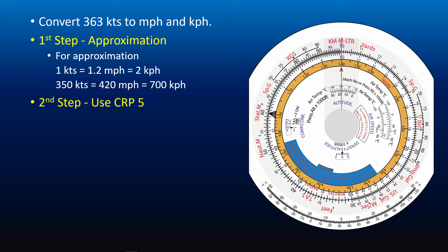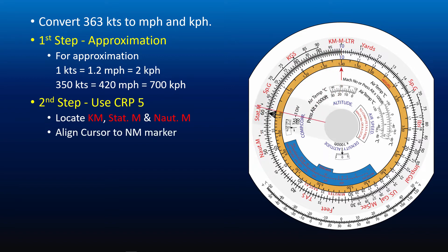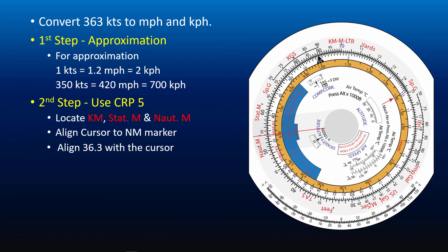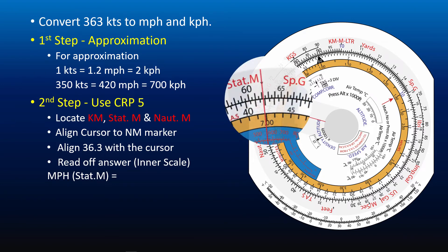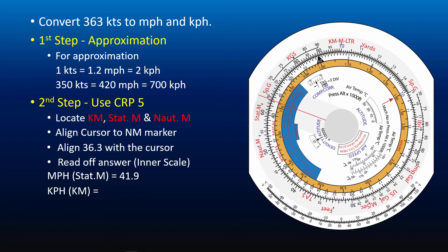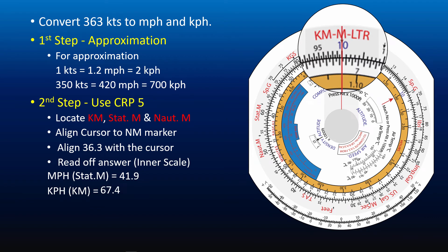The second step is to use CRP5 to solve the question. Locate the KM, STAT.M, and naut.M markers. Align the cursor to the naut.M marker, then align 36.3 on the inner scale with the cursor to represent 363 knots. For miles per hour, read the answer opposite the STAT.M marker: 41.9. For kilometers per hour, read the answer opposite the KM-M-LTR marker: 67.4. Our approximate value is in the hundreds, so 363 knots equals 419 miles per hour and 674 kilometers per hour.